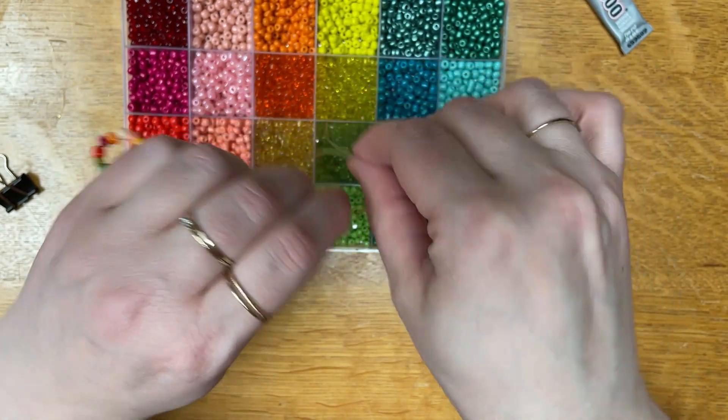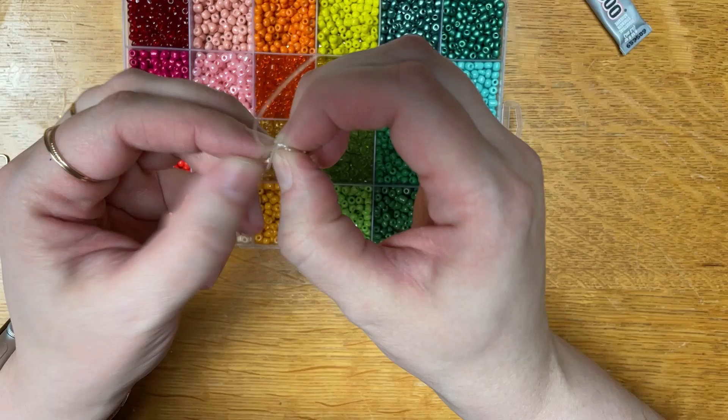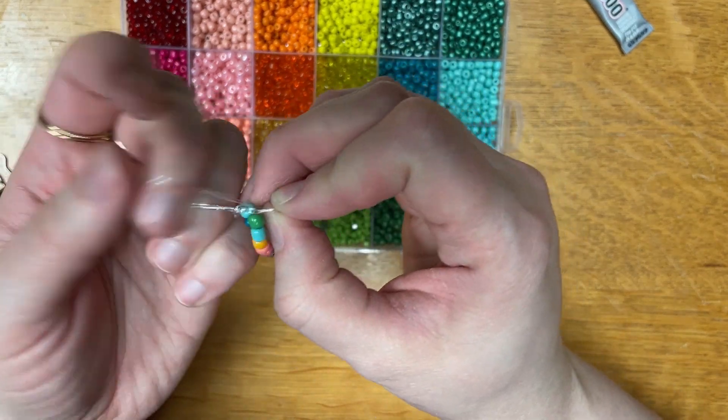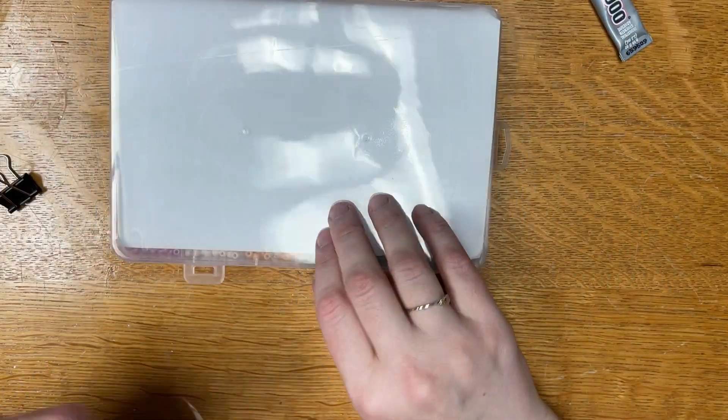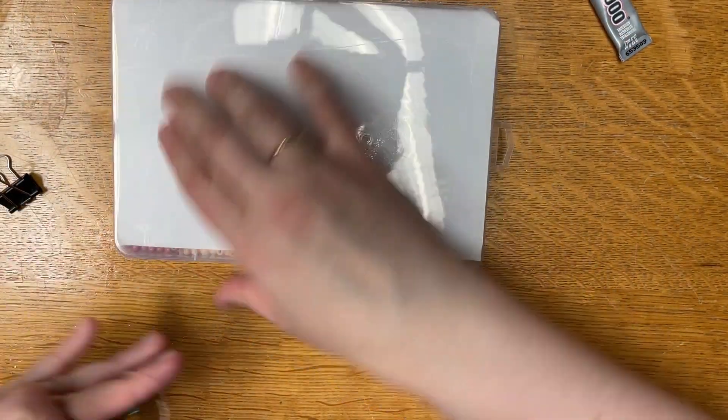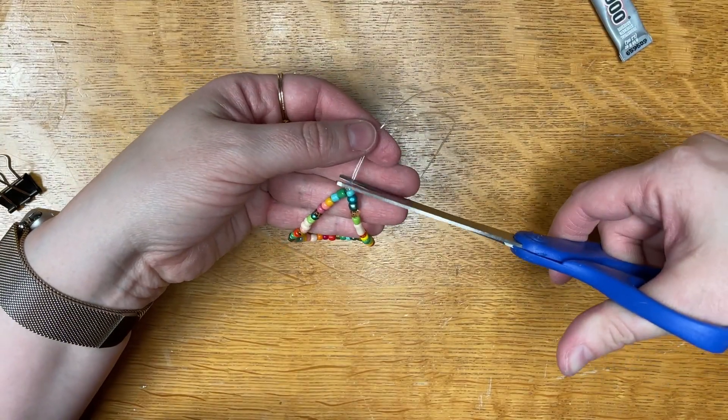So tie your little knot. You're gonna get it as close to the beads as you can, and you can actually stick a little pin in it or a needle to help take the knot as close to beads as possible. And then grab that glue and stick it right on the knot.